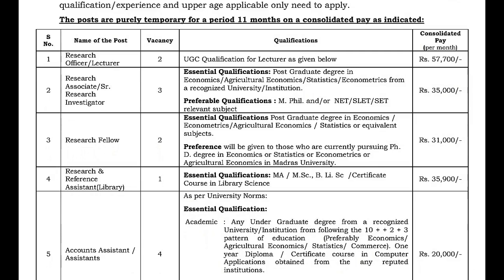The consolidated pay for Research Officer or Lecturer is 57,700. For Research Associate or Senior Research Investigator, 35,000. For Research Fellow, 31,000. For Research and Reference Assistant Library, 35,900. For Accounts Assistant or Assistants, 20,000.